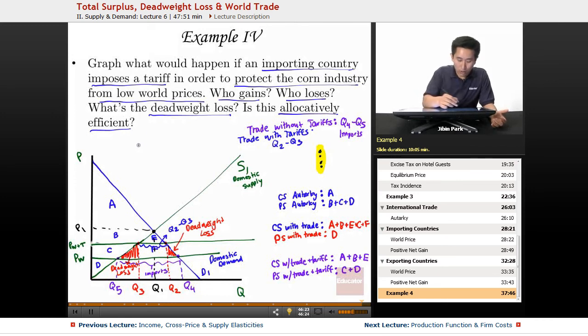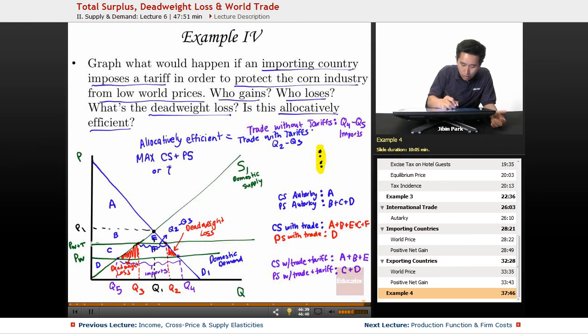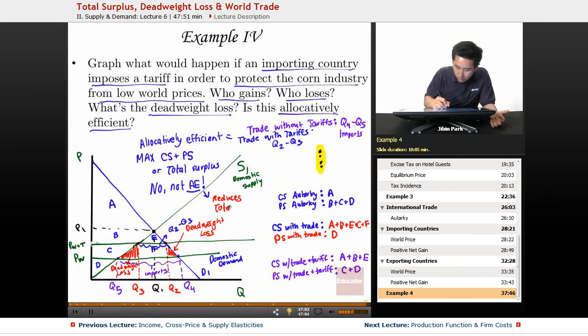Is this allocatively efficient? Now we know that allocatively efficient equals max CS plus PS or total surplus. So when you add a tariff, is that allocatively efficient? And this is a very clear and resounding no. Not allocatively efficient. And why not? It reduces total surplus. And that's absolutely what you don't want to have in terms of international trade. If the goal is to increase total surplus, then you want to stay away from any tax or tariff because that's going to reduce total surplus.